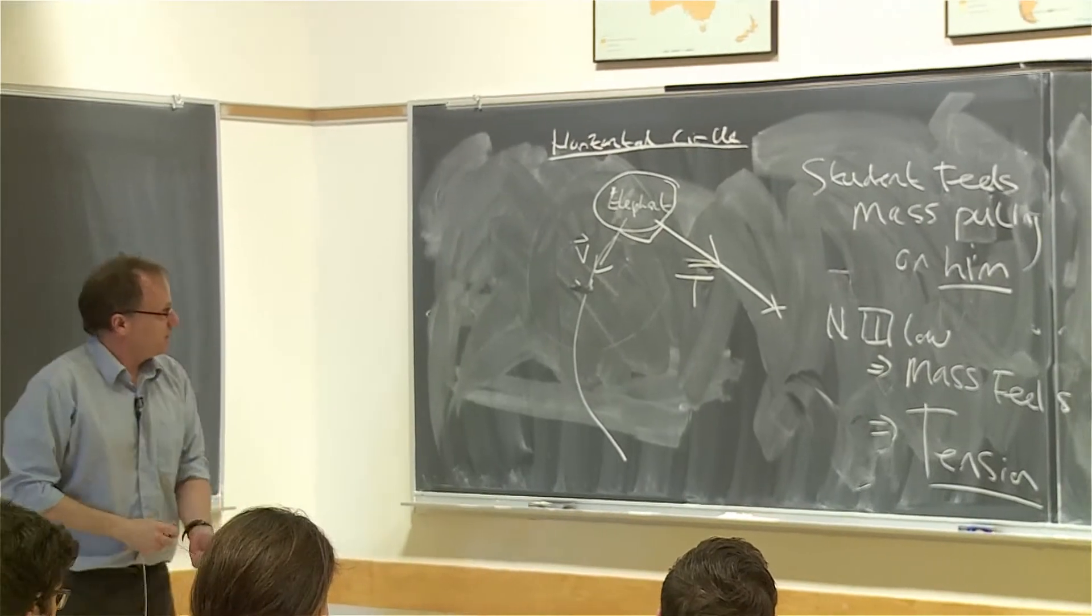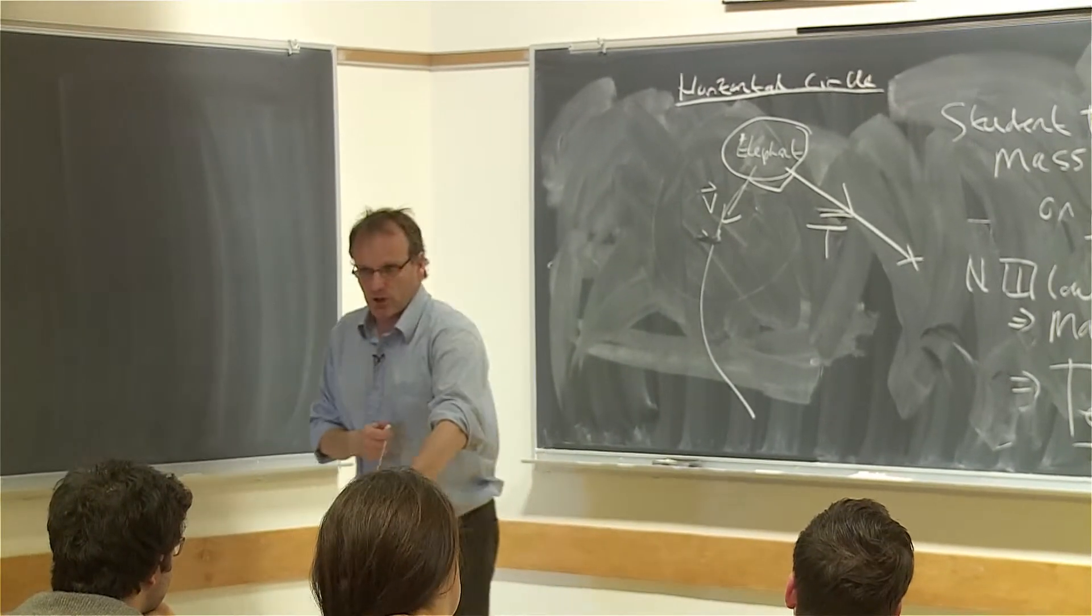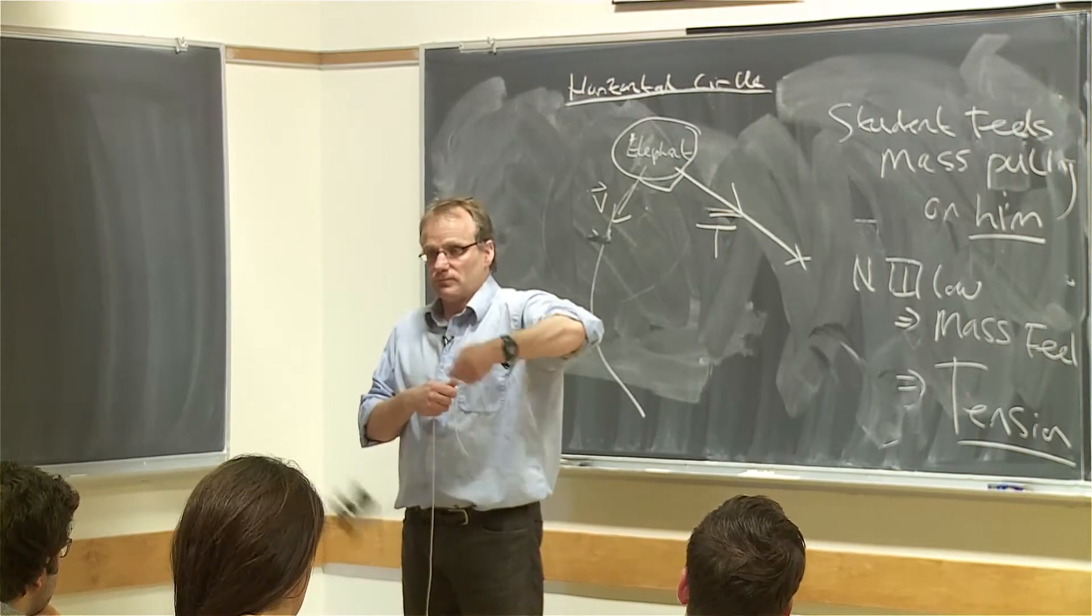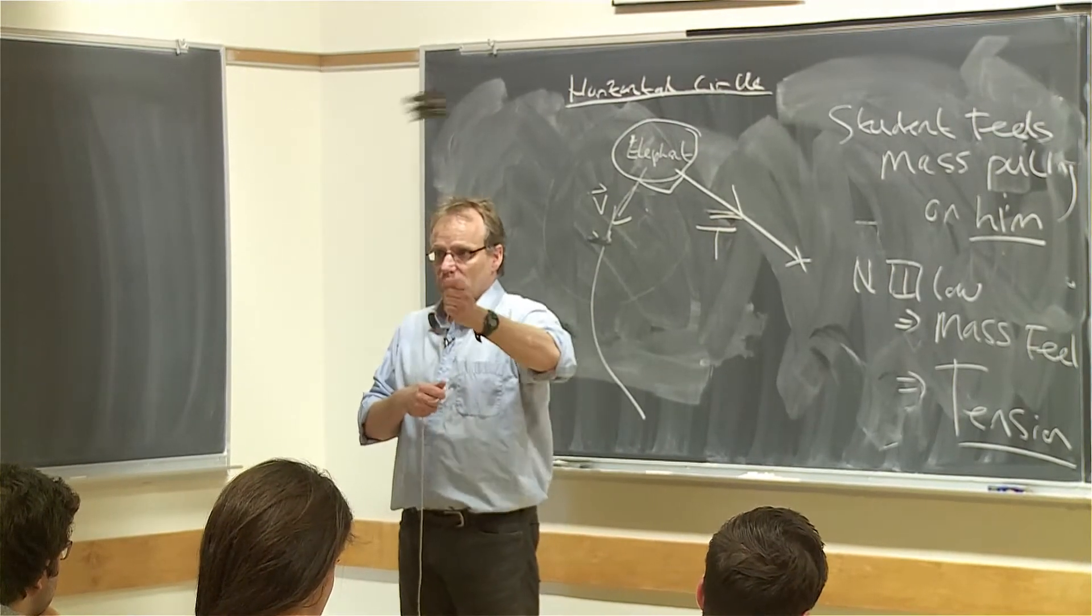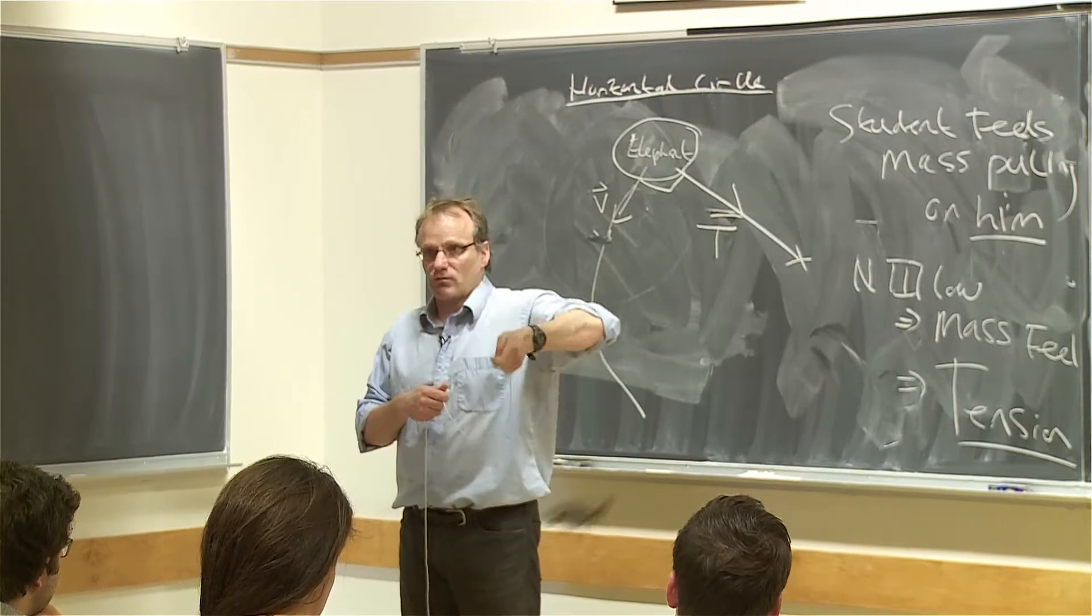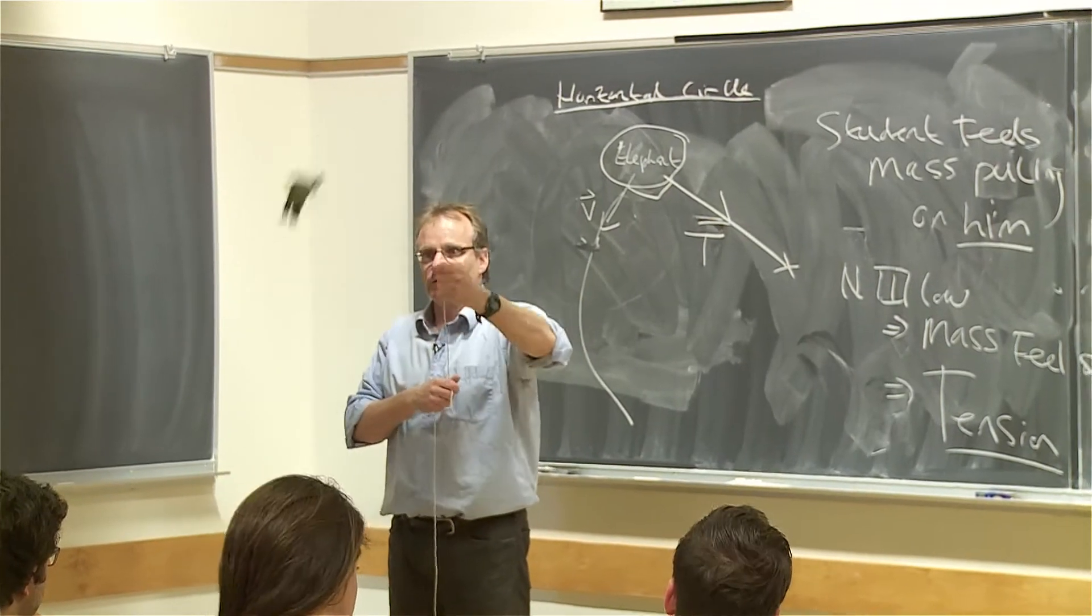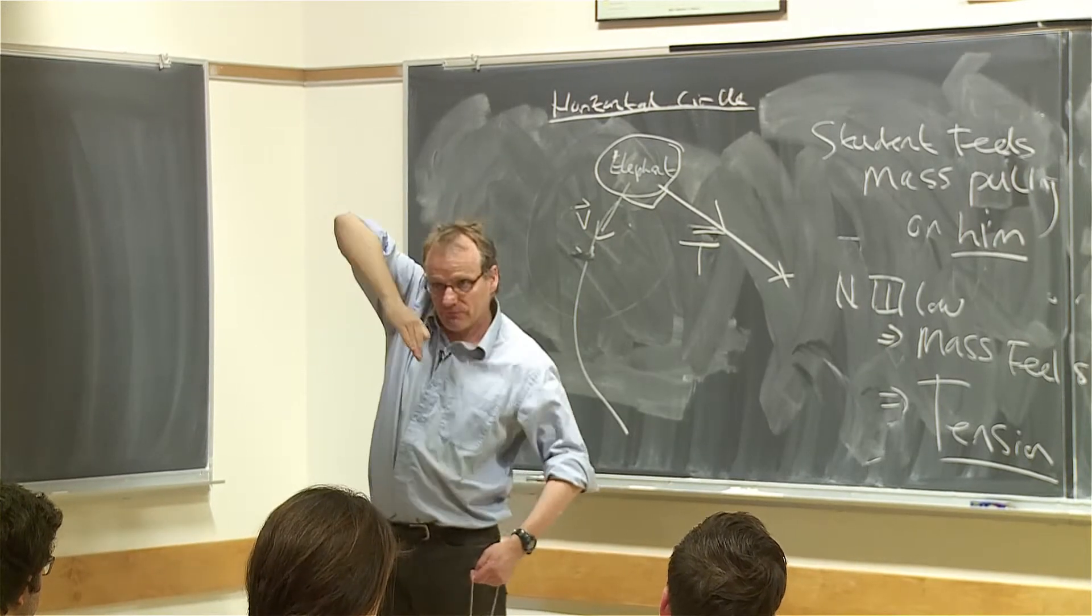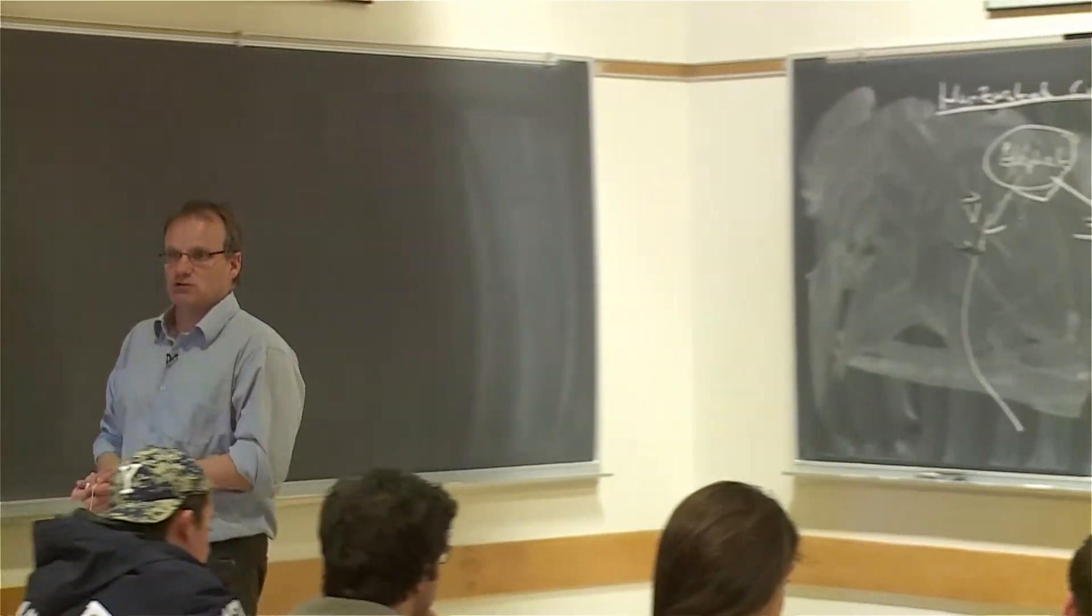You have to have this tension to make the object move in a circle. But the velocity of the elephant, because it's being restricted by the string, is caused to move in a circle. So at any point in this elephant spinning, the elephant is traveling in that direction, but the force on it is perpendicular. That's the key to circular motion.